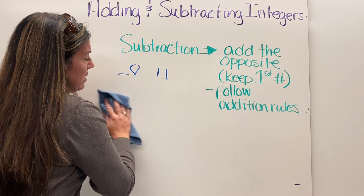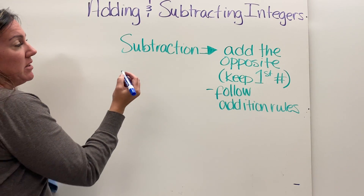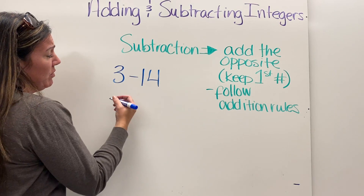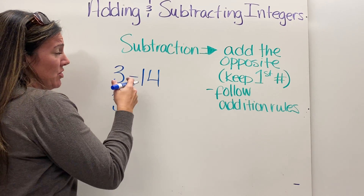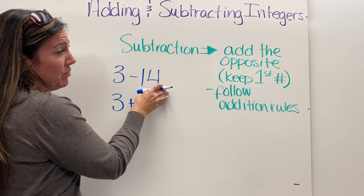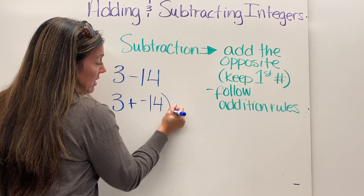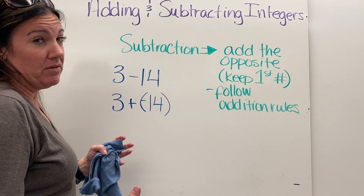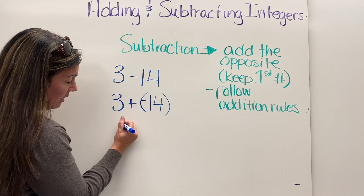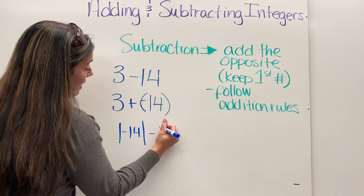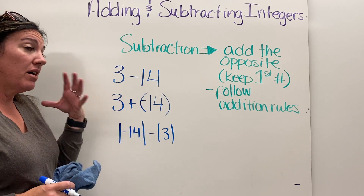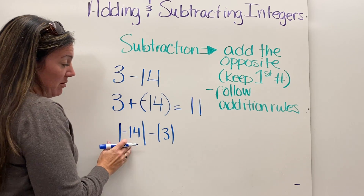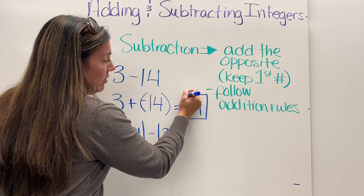One more: three minus fourteen. I keep the three, change subtraction to addition, and the opposite of positive fourteen is negative fourteen. Now I'm adding integers with different signs. I take the absolute value of negative fourteen minus the absolute value of three: fourteen minus three is eleven. Because the larger absolute value belongs to the negative number, the answer is negative eleven.